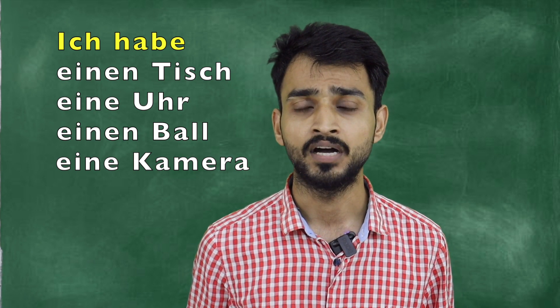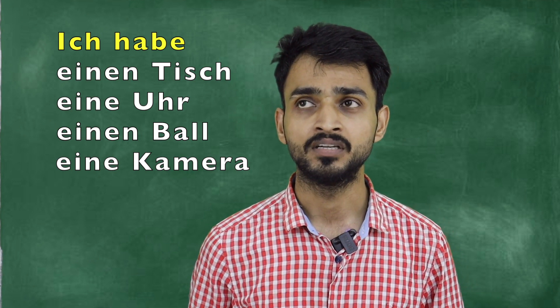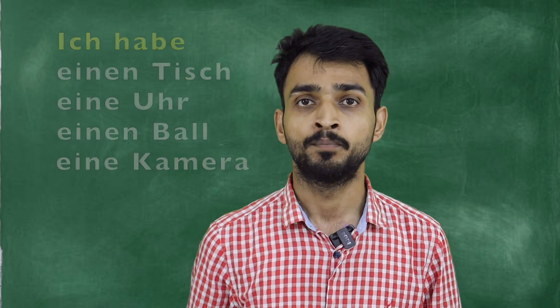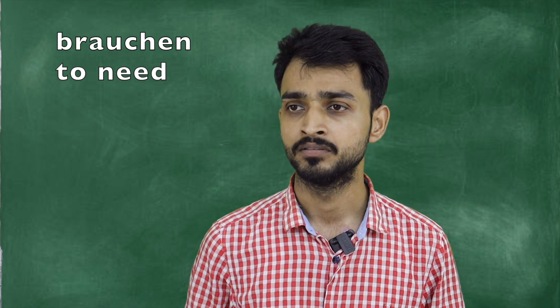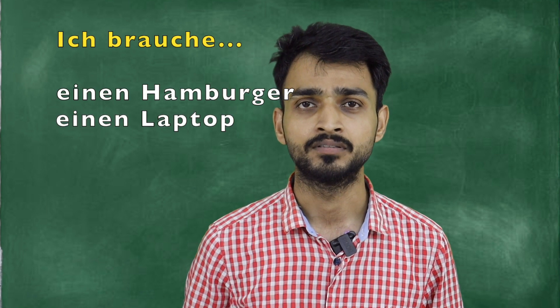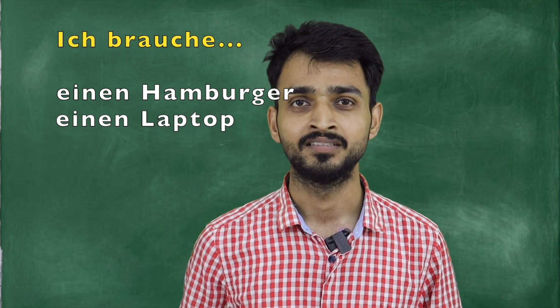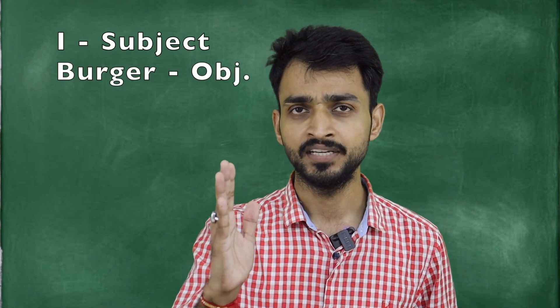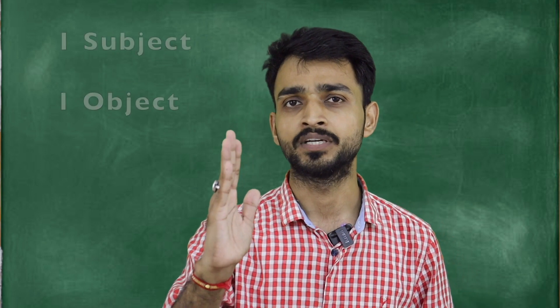Ich habe eine Uhr — I have a watch. Accusative. Next verb: 'brauchen' — to need. If I say 'I need,' what I need is my object — my accusative object. I need a hamburger — Ich brauche einen Hamburger. Einen Hamburger is my accusative object. Who needs? I. What I need is my object. If you have one subject and one object, it is accusative.